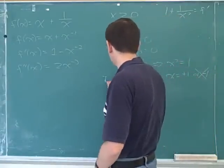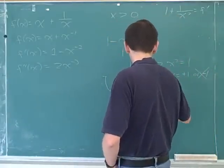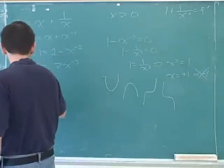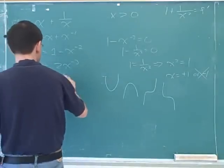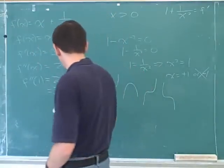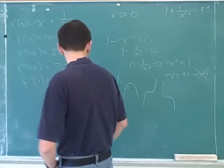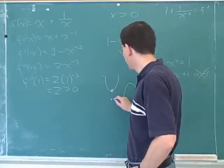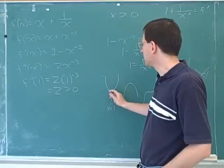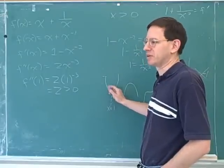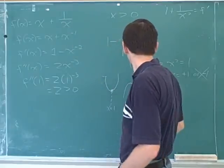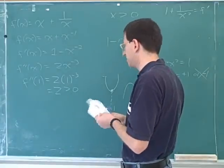Then we have to figure out what does the graph look like there — is it a maximum or a minimum? We could use the second derivative to figure that out. The second derivative is positive there. A positive second derivative means the graph is concave up at x equals one, which means this is a minimum for the function — and that's what we're looking for. We want to find the place where we minimize this function, so x equals one is the answer.